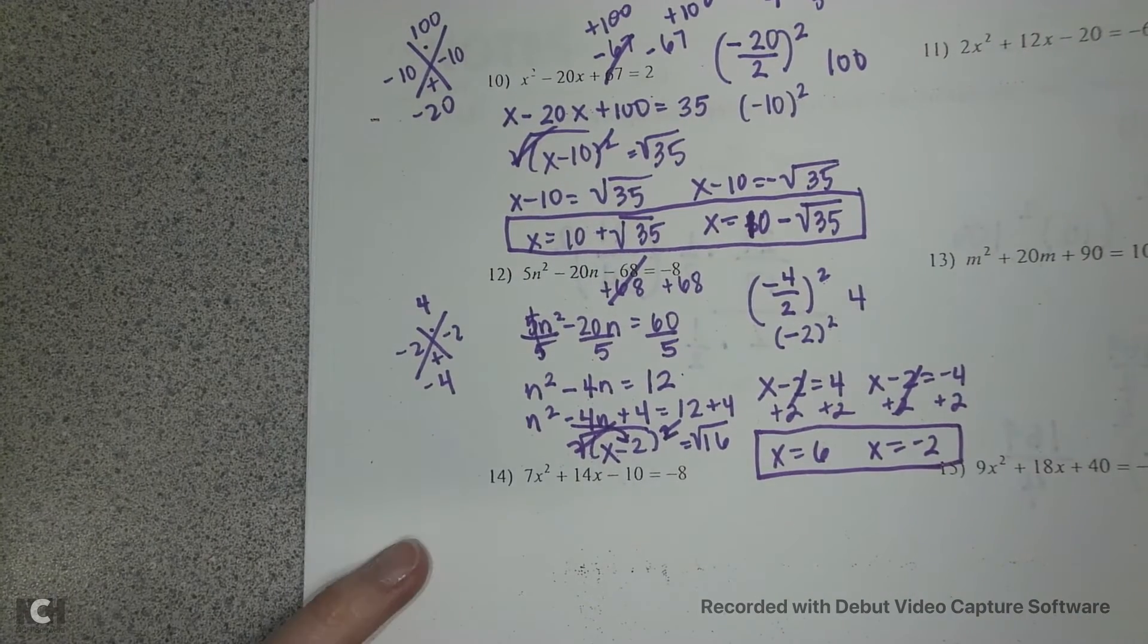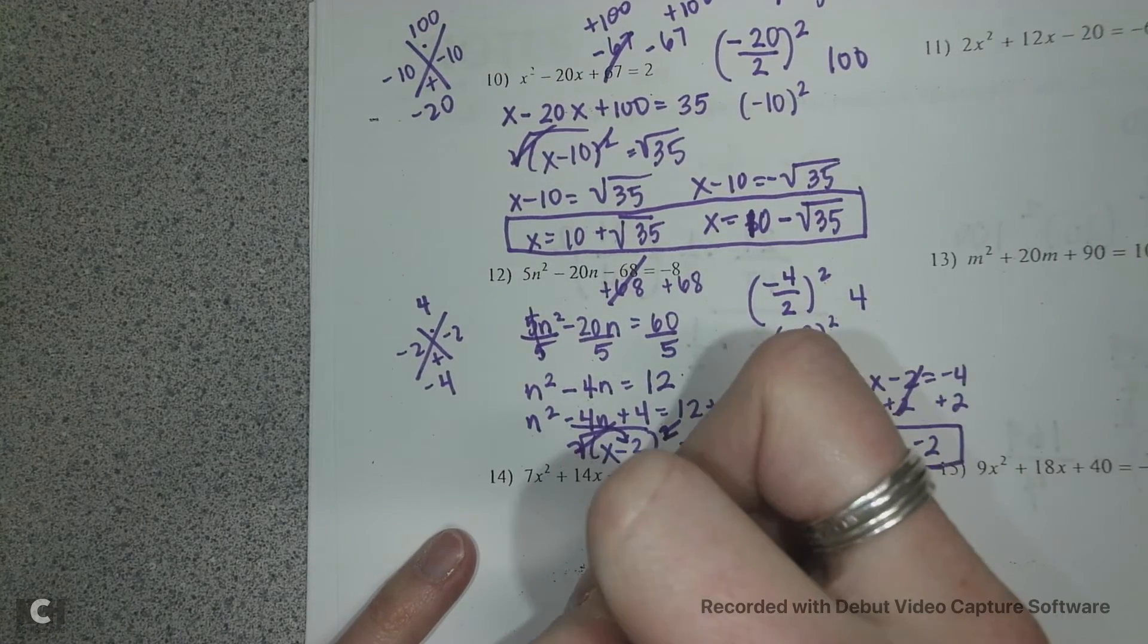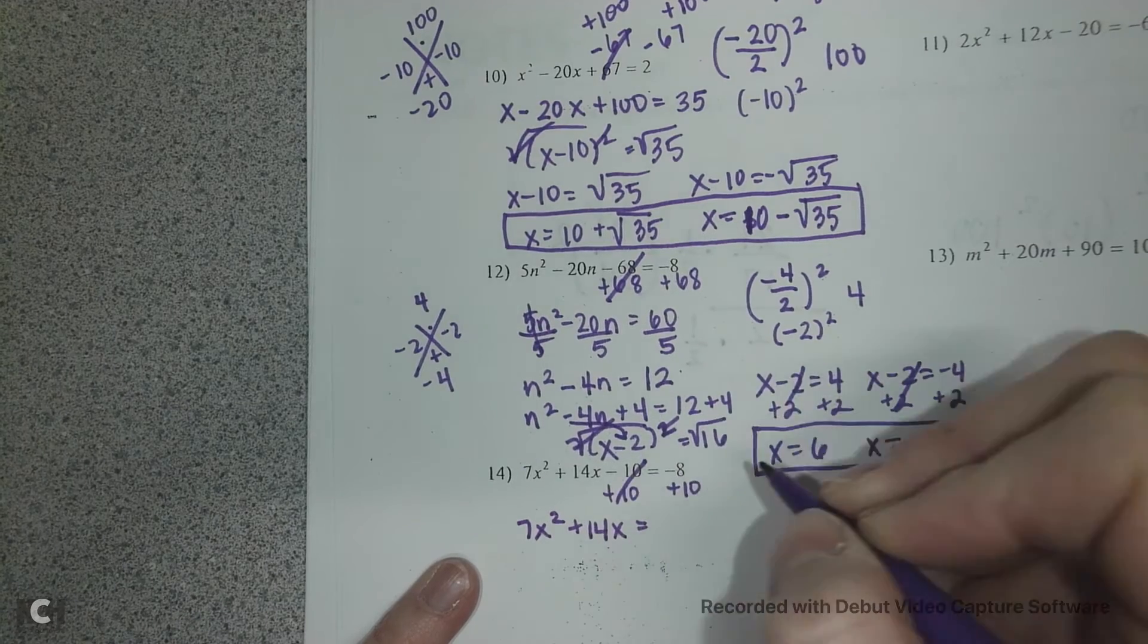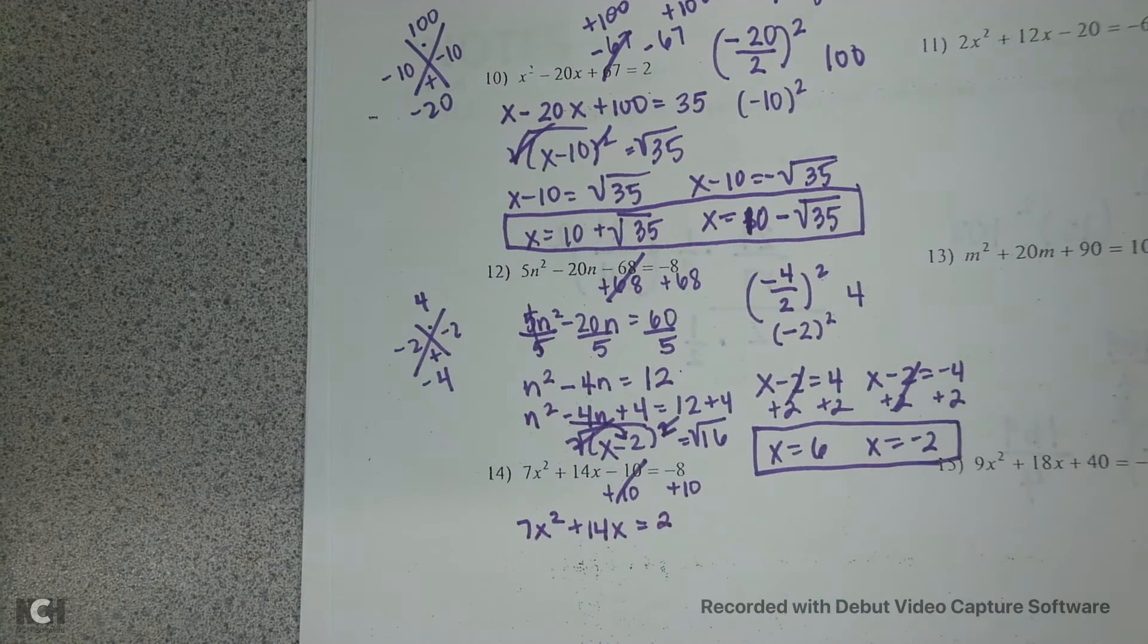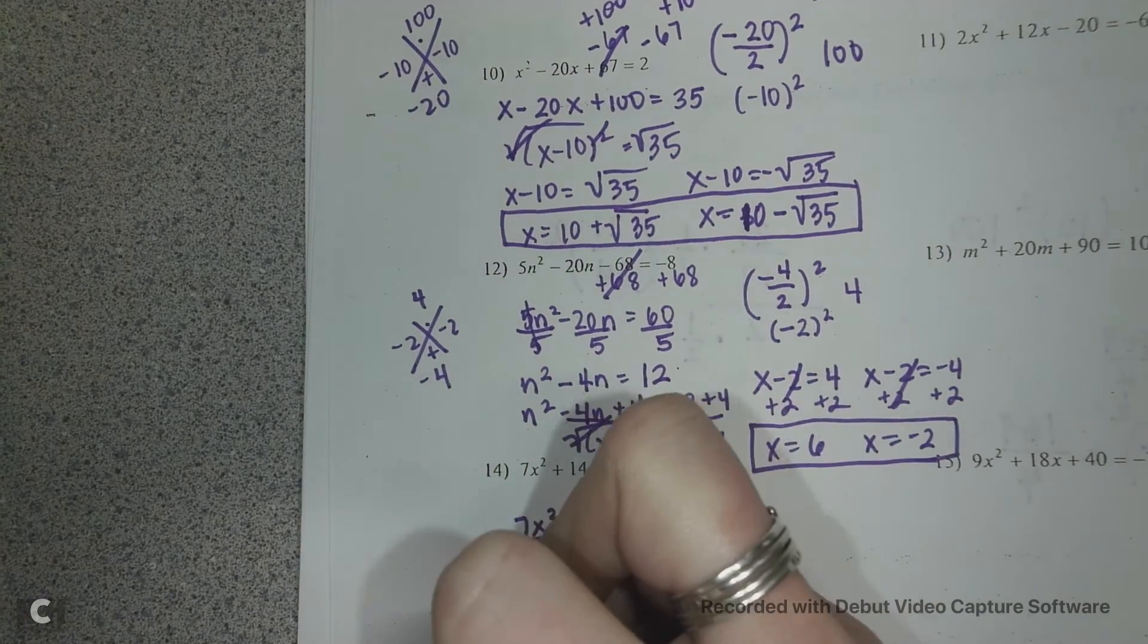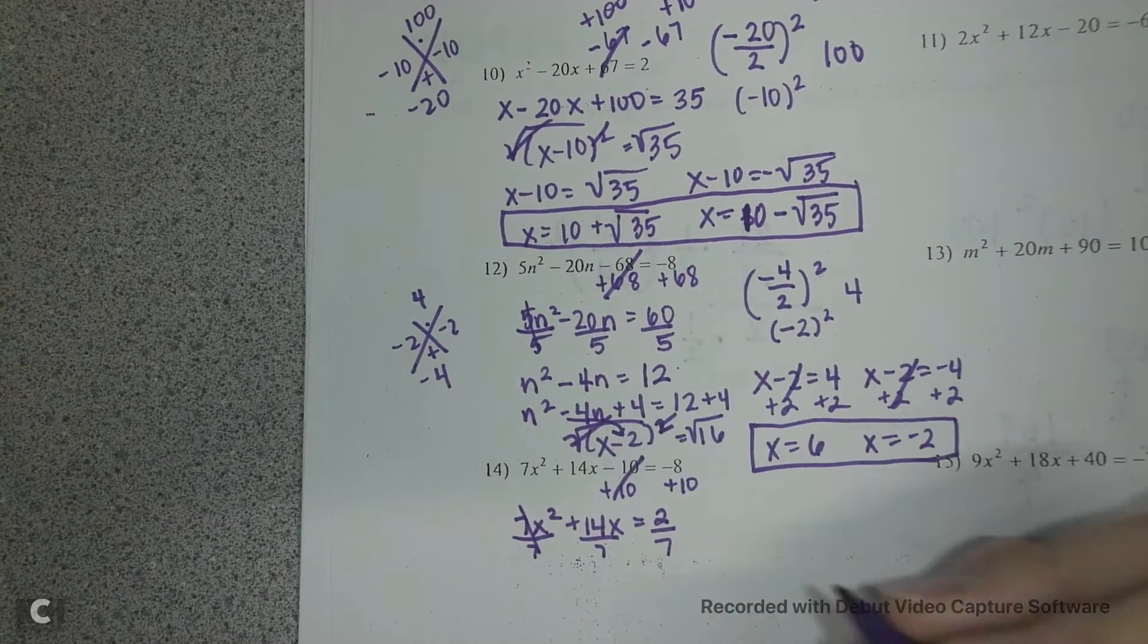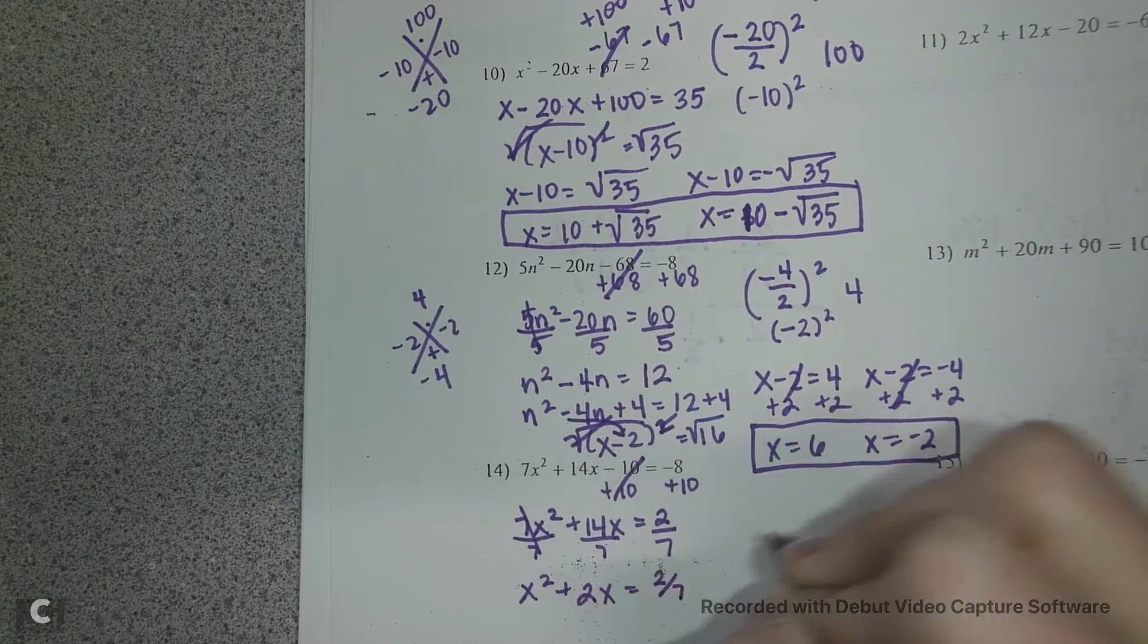Last one. Number 14. Again, I have this leading coefficient of 7, but 10 divided by 7 is not pretty. So let's move our c value over first and see if we can get better looking numbers. And negative 10 plus 8 is 2. So not the greatest, but at least we'll only have one fraction instead of two fractions. Everything gets divided by 7. Again, kind of sucks. But our b value is good, so that's nice. x squared plus 2x equals 2 sevenths. Just keep that guy.